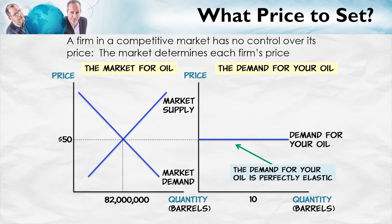Why can you sell all the oil that you want at the market price? Simply because your production — let's say 10 barrels a day, or 20 or 30 — is so small relative to the world production of 82 million barrels of oil per day that however much you produce from your single well, that's not going to influence the price of oil. You can double or triple your production and the price of oil is still going to be $50 per barrel. So your only choice to maximize profit is going to be a choice over quantity. You look at the market price — say $50 per barrel — and your decision is: how much do I want to produce at that price? 2 barrels, 3, 4, 10, 20? That is going to be your key question.